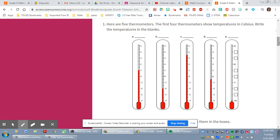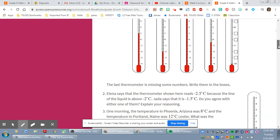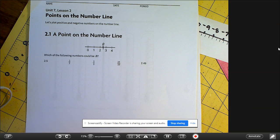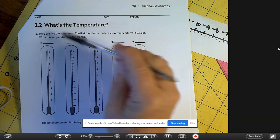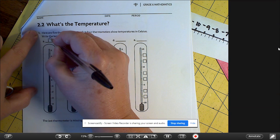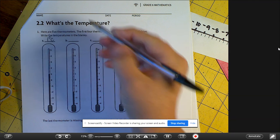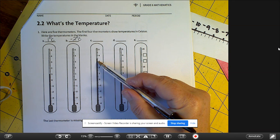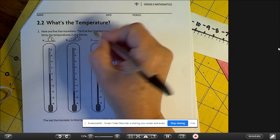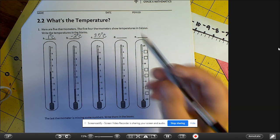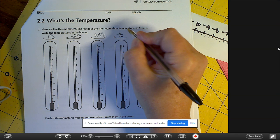Okay, in the thermometers, the first four thermometers show temperatures in Celsius. Write the temperatures in the blank, and then for the last one, you're going to write the numbers in the box. So I'm going to do this on the page that I have printed out for 2.2, what's the temperature. If I'm looking here, that's a positive one, so this would be 1 degree Celsius. B is negative 2 degrees Celsius. C is 3.5 degrees Celsius. D is halfway between the zero and the one, so I'm going to call that negative one-half, or 0.5 degrees Celsius.